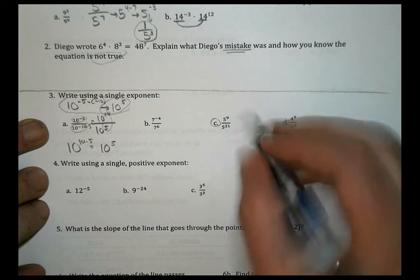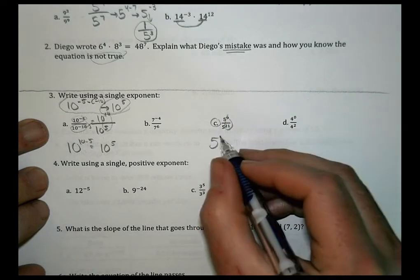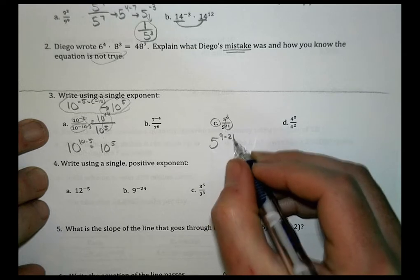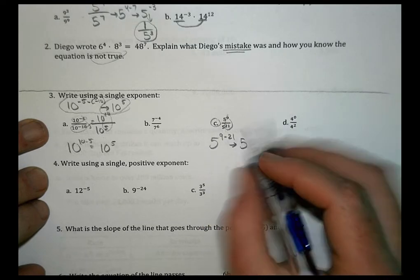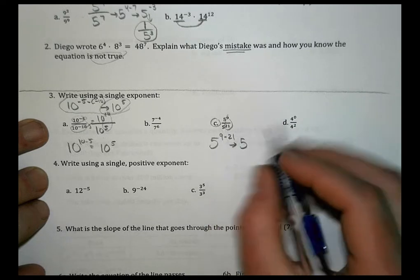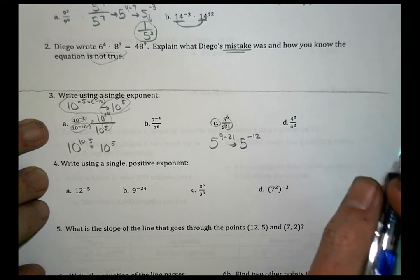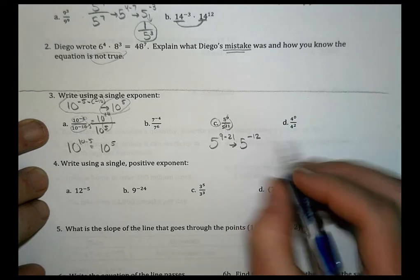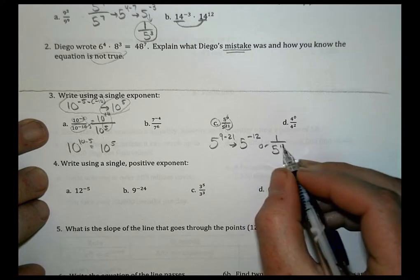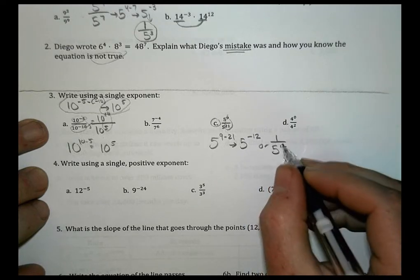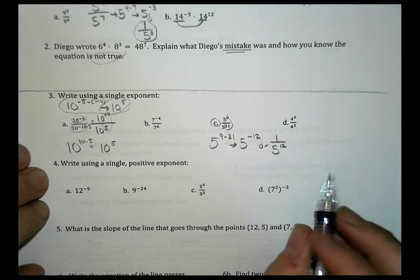Let's look at C. We have 5 to the 9 minus 21. 9 minus 21. Well, 9 minus 21 is, or 21 minus 9, the difference there is going to be 12, but it stays a negative 12. I could leave it like that, or I could write it as 1 over 5 to the 12th power, depending on what your teacher's been talking about. Both of those are equivalent, and they both work there.